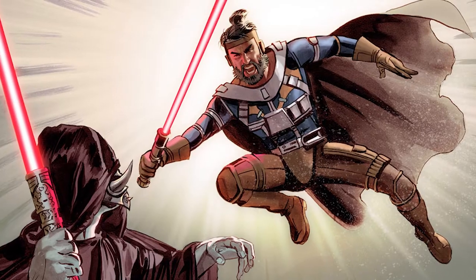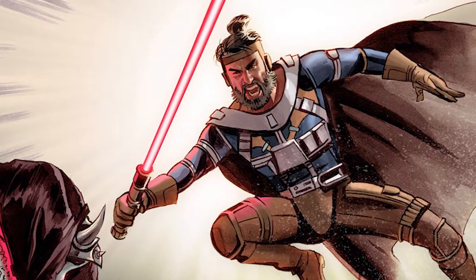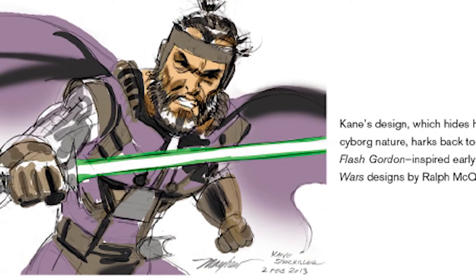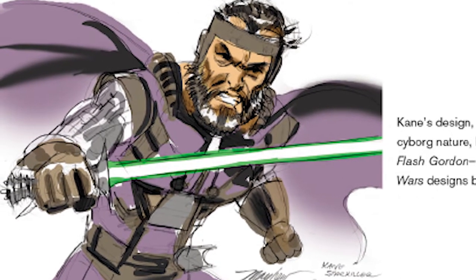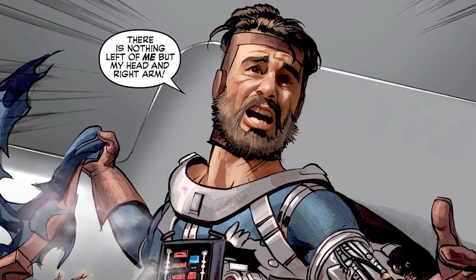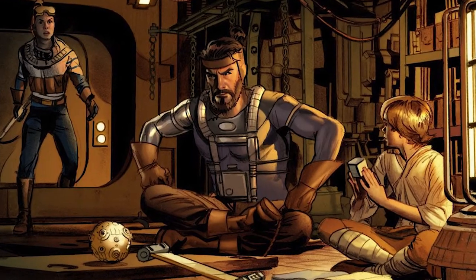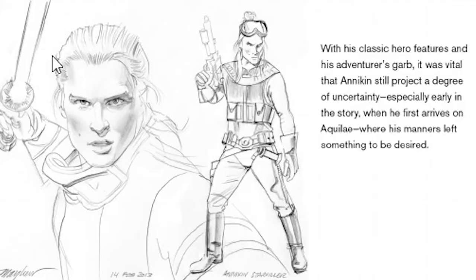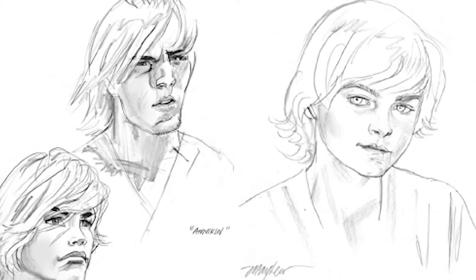Lastly was Kane Starkiller, a battle-torn warrior, half man, half robot. He was a Jedi Knight, a character of light. He not only had the robotic form of Vader, but he was also father to Anakin Starkiller and Dick Starkiller. The latter would become Luke Skywalker.